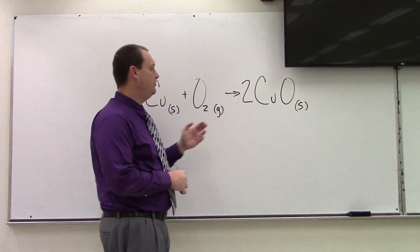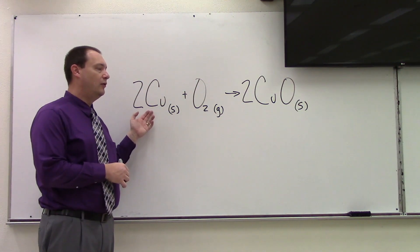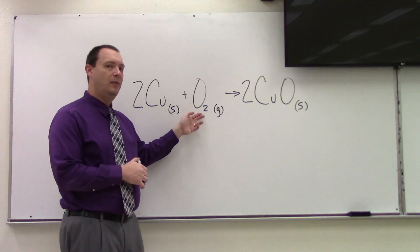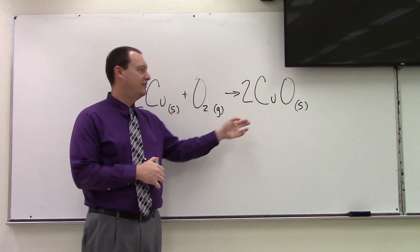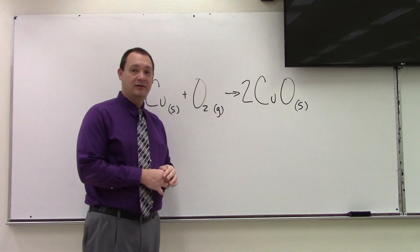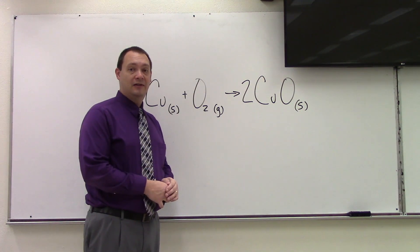And then this equation needs to be balanced. We need two moles of copper for every one mole of oxygen gas, and that will give us a product of two moles of solid copper oxide.